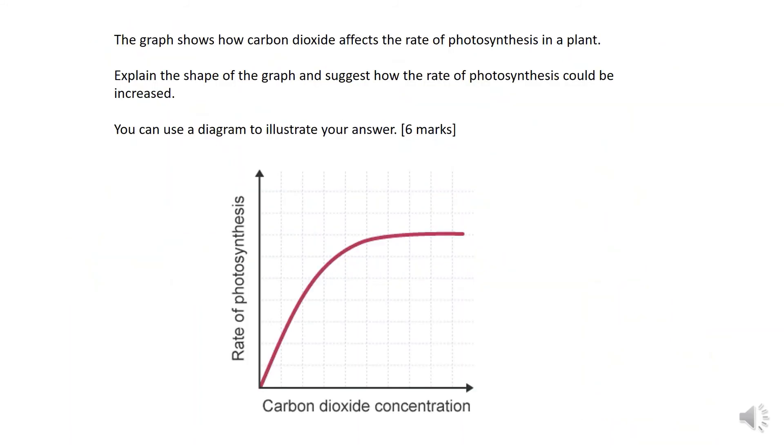I want you to pause the video and have a go at the question on the slide. The graph shows how carbon dioxide affects the rate of photosynthesis in a plant. Explain the shape of the graph and suggest how the rate of photosynthesis will be increased. You can use the diagram to illustrate your answer.